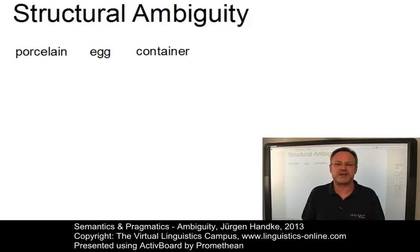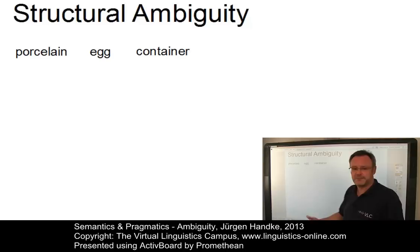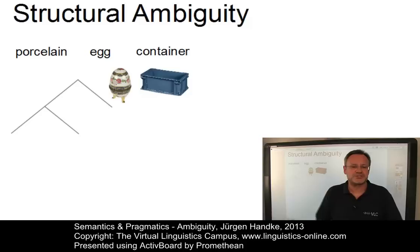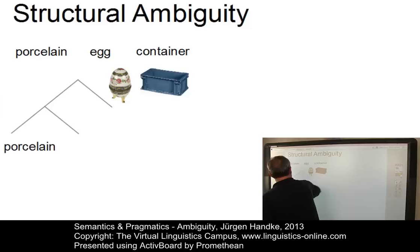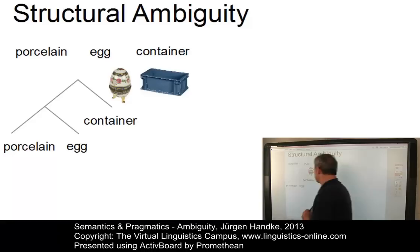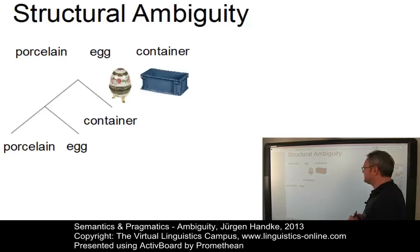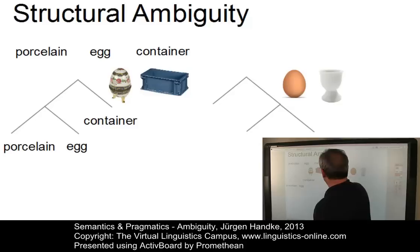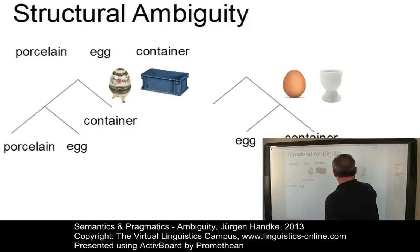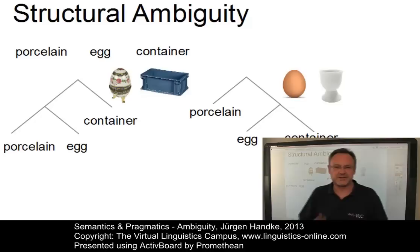The first example shows that complex compounds can have different interpretations. The compound 'porcelain egg container' can be interpreted in two ways depending on its structural hierarchy. On the one hand, we can have a container for porcelain eggs, where 'container' is the head of the compound. On the other hand, we can have an egg container which is made of porcelain. You can clearly see the different constituent or morphological structure of these two compounds.